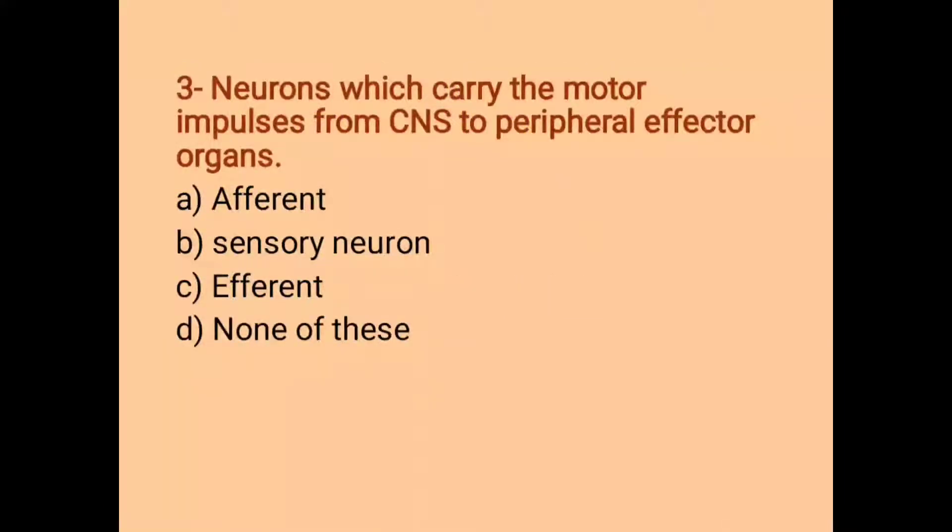Neurons which carry the motor impulses from central nervous system to peripheral affected organs. And the options are Afferent, Sensory Neuron, Efferent and None of these. And the correct option is Efferent.